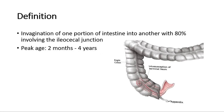Intussusception is the invagination of one portion of the intestine into another portion, where 80% of cases commonly involve the ileocecal junction. This picture here shows the ileocecal junction — you can see the distal colon invaginates into the proximal colon. This condition is called intussusception.